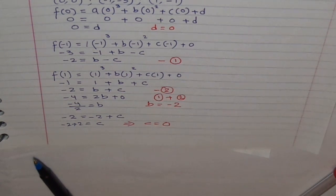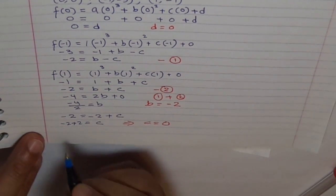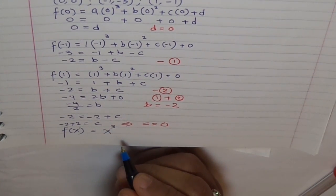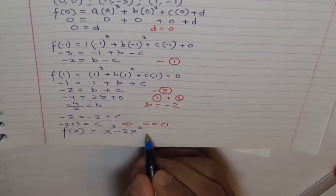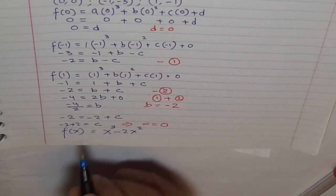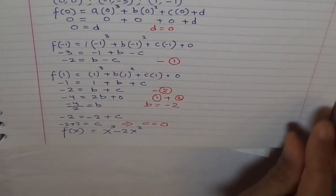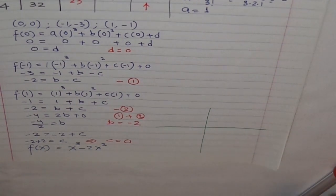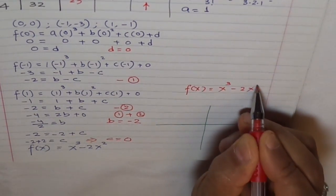So in this process we have found all the variables. Now knowing all this, we substitute them back into our equation to get the final equation. F(x) equals A·x³, A was 1, so x³, plus B·x², B was minus 2, so minus 2x², plus C·x, C was 0, plus D, D is also 0. Therefore our function is F(x) equals x³ minus 2x².